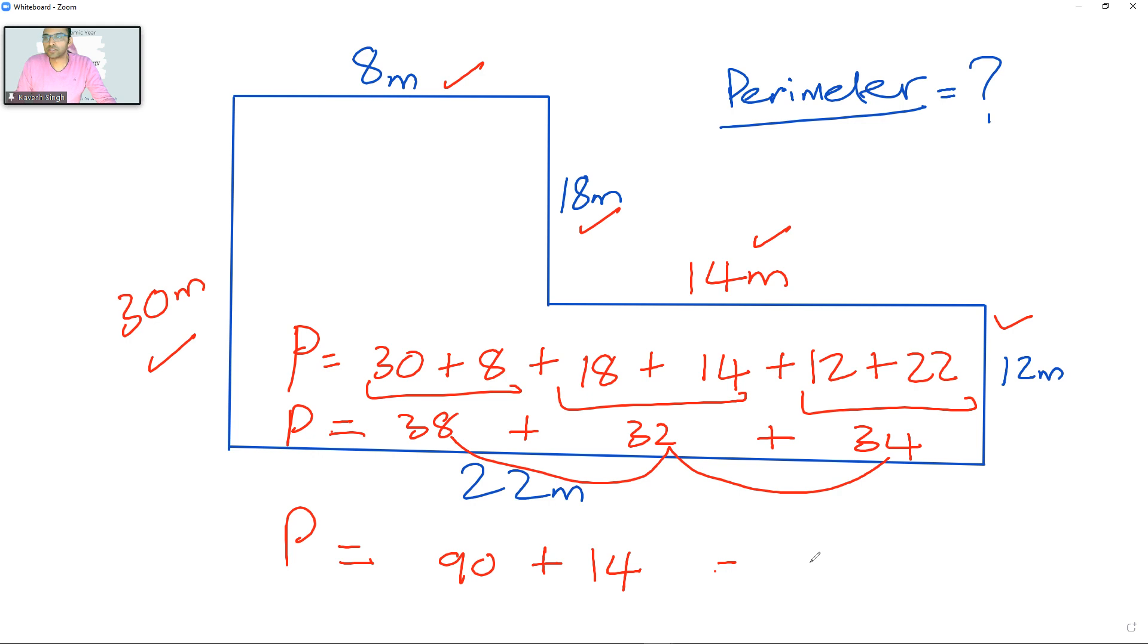So the final answer I got here is 104 meters. Well done, Grishma! 104 meters is going to be the perimeter. Does that make sense now? All right, shall we try another one? Let's see if you can do another one now.